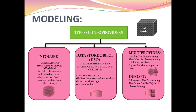Modeling — types of info providers. Info cube: it stores data in a multi-dimensional way. Info cube contains multiple tables in star schema format, which we will be learning in the coming class, so as to analyze the data from different ways. Data store object: it stores the data in a two-dimensional way, very similar to our tables. Its main aims are to utilize the override functionality, maintain the image, and act as a backup.